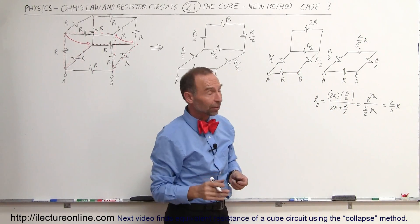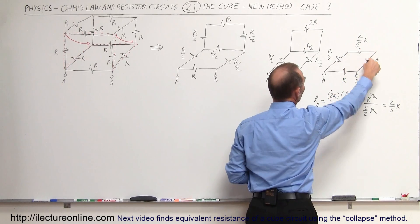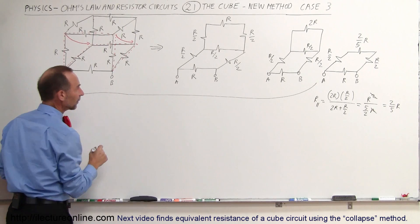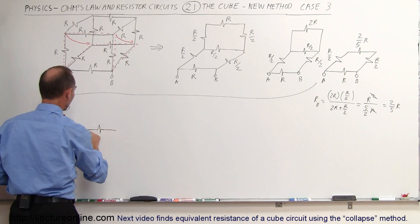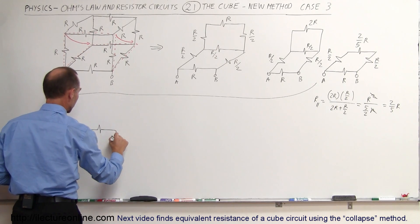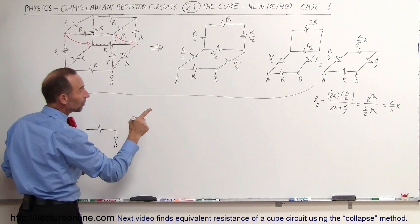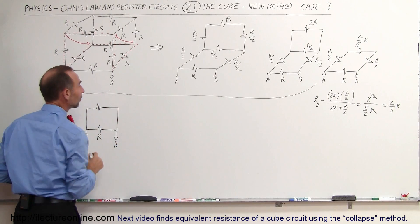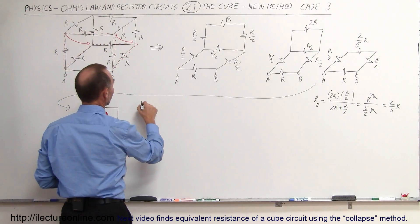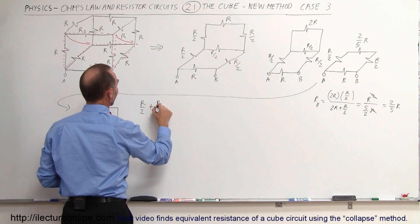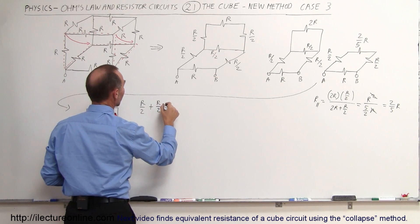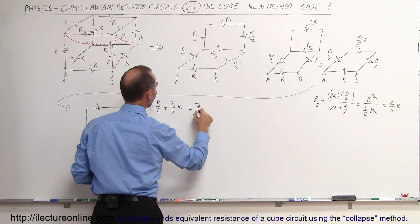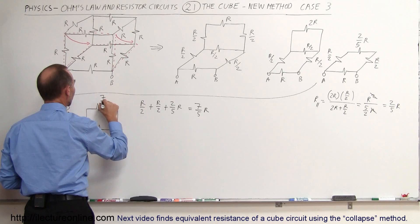Now we have two parallel branches. For one branch we simply add the series resistors together: R/2 plus R/2 plus 2/5 R, which equals 1R plus 2/5 R, equal to 7/5 R. And the direct resistor between A and B still has a value of R.